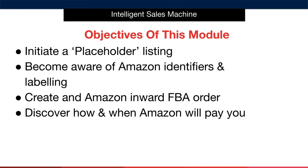Our first objective inside the FBA roadmap is to create a placeholder listing. What do I mean by a placeholder listing? Well, it's very simple. We're going to collate the basic information required to have a listing installed into the Amazon catalogue, purely to facilitate the creation of an inward FBA order.